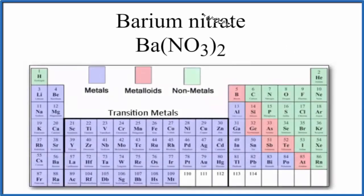In this video, we'll look at whether barium nitrate, that's Ba(NO3)2, is ionic or covalent.